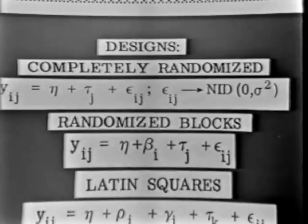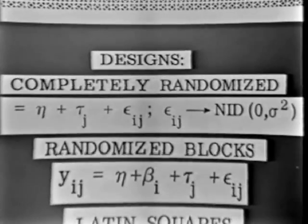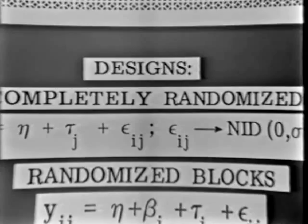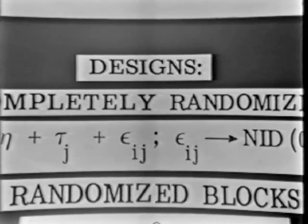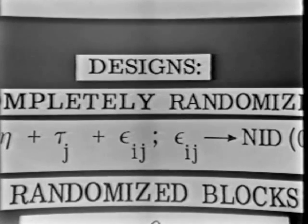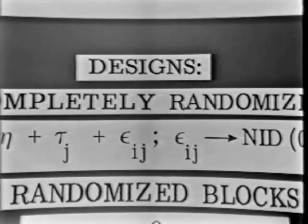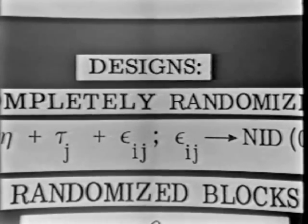This will be the last of our lectures on blocking and designs. You recall we first started out talking about the completely randomized designs. Here's a situation where we were not worried about blocking variables. We merely ran our k treatments randomly and recorded the data, and you can see the very simple mathematical model which is involved here.